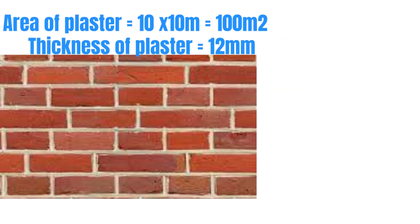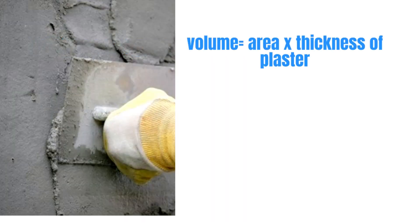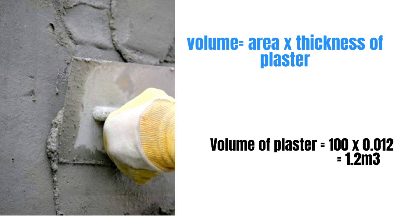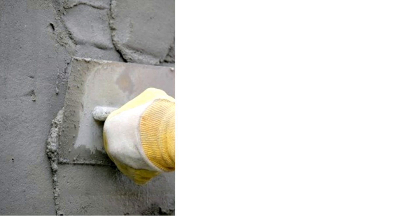The thickness of plaster is 12 millimeters. The volume of plaster required is area of plaster multiplied by the thickness of plaster — that is 100 multiplied by 0.012 — which equals 1.2 cubic meters. That is the wet volume of mortar, which consists of cement, sand, and water.